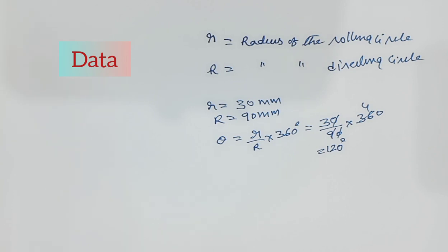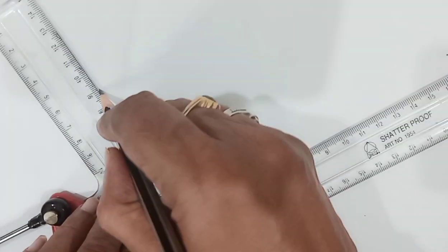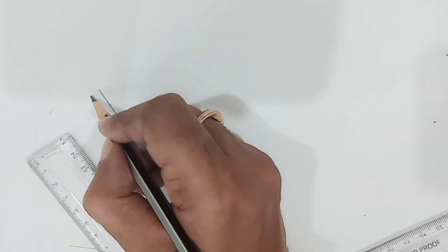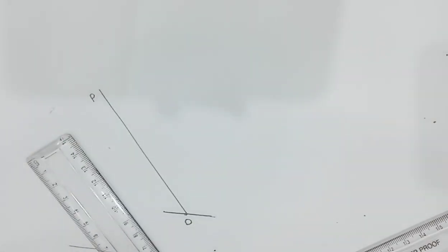Radius of the rolling circle is 30 mm, radius of the directing circle is 90 mm, and the angle subtended by the arc is 120 degrees. Now we will construct the hypocycloid. Draw one reference line, then locate a point O — that will be the center of the directing circle. The radius of the directing circle is 90 mm. Say OP: P is the radius of the directing circle, that is 90 mm.